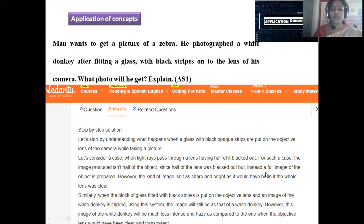Since half of the lens was blacked out, instead a full image of the object is prepared. However, the kind of image isn't sharp. So here, we are not able to get the half of the image of the object to what we kept. But instead, it is possible to get the blurred one instead of a clear picture. That's the reason why. Same can be implied for this picture what he is taking now.